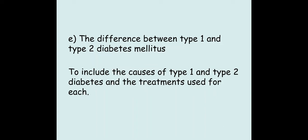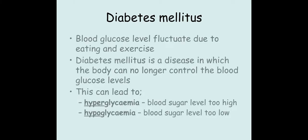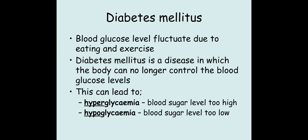Welcome biologists. This session we're going to take a look at what diabetes is and how it can be controlled. Diabetes mellitus is where your body can no longer control the blood glucose concentration, and this could lead to too much sugar in the blood, which is hyperglycemia, or too little in the blood, which is hypoglycemia.